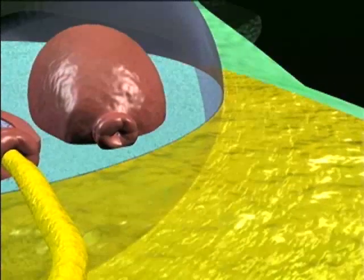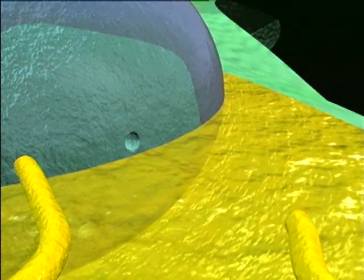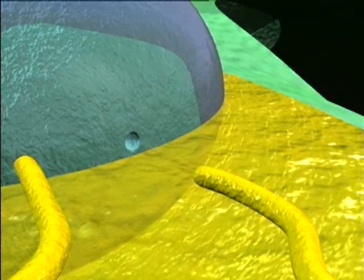Adjacent archegonia may also be fertilized if more than one pollen grain is present. The female gametophyte may therefore contain several zygotes.